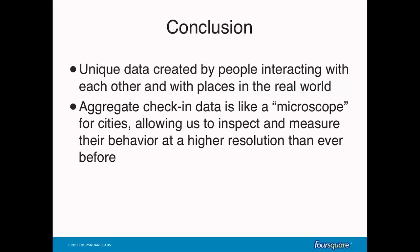In conclusion, this is a very unique dataset created by people interacting with each other and with places in the real world. Today we're talking about 20 million users, but there are now over a billion people carrying around a device in their pocket constantly emitting a stream of location data — latitudes and longitudes we can use to help improve our cities and make them easier to use. This data acts almost like a microscope for cities, allowing us to inspect and measure the behavior of these cities at a higher resolution than ever before.